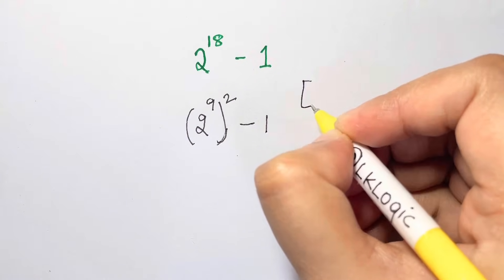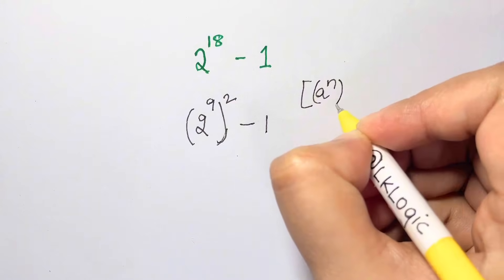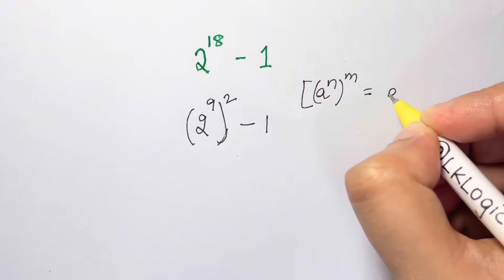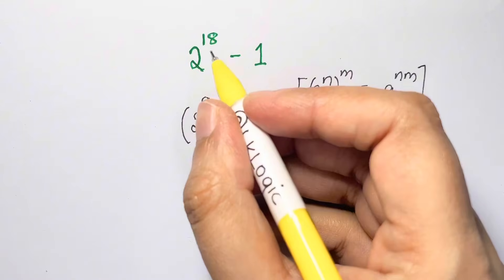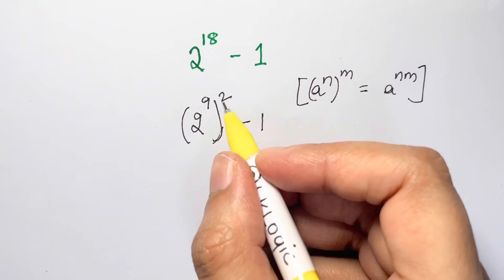So what have we used here? a to the power of n whole to the power of m is equal to a to the power of n times m. So here you have the product of the power, so you can split it in this way.